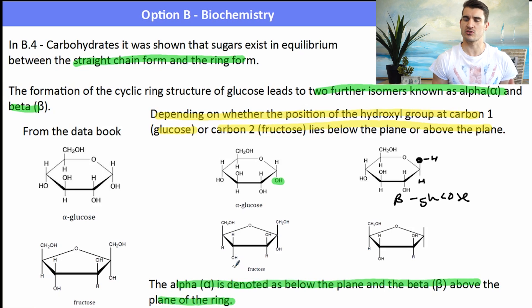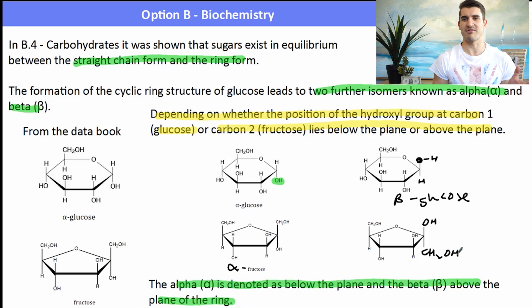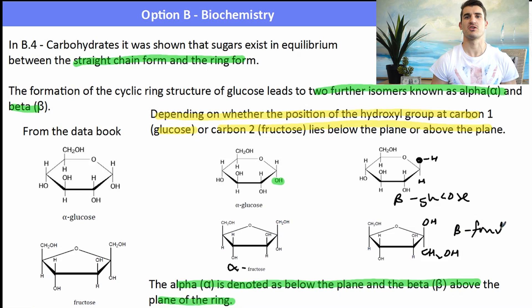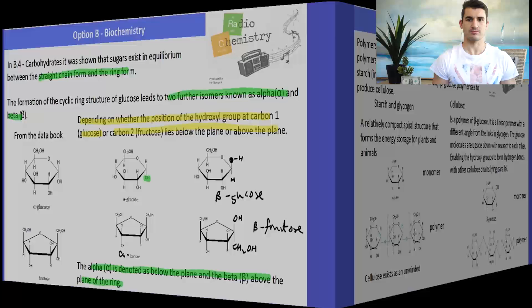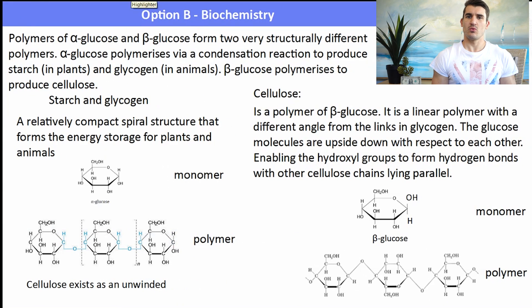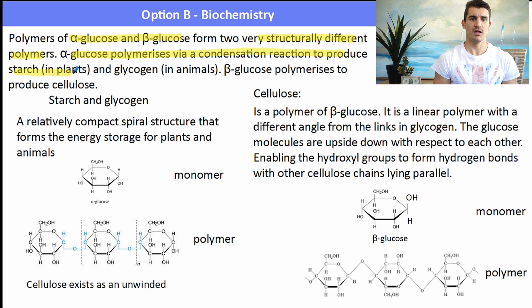For fructose it's the same except fructose has a five-membered ring rather than a six-membered ring, and we're looking at the CH₂OH group. So we have alpha fructose as the first one, and if we flip those around we have beta fructose with the hydroxide group above the plane of the ring. These are important because we can form polymers of alpha and beta glucose, giving two very different structural polymers. Alpha glucose polymerizes to starch in plants and glycogen in animals, while beta glucose polymerizes to produce cellulose.